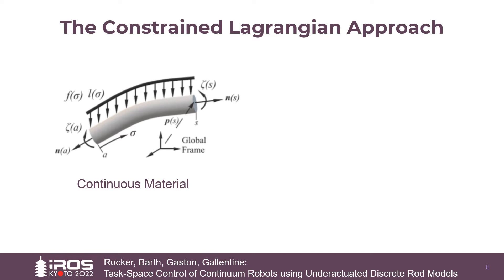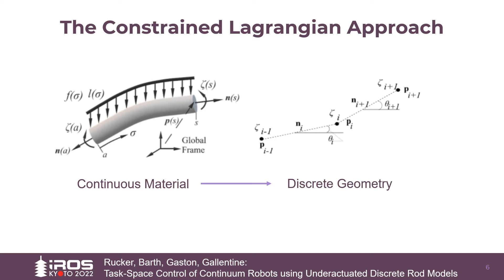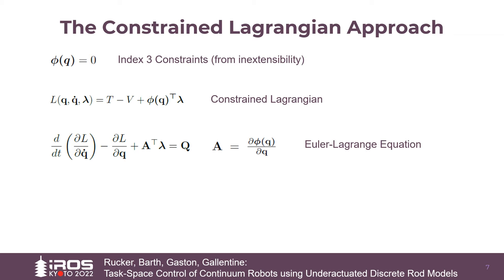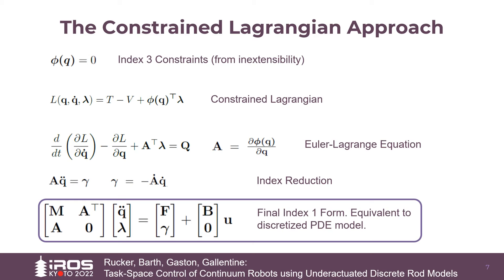Alternatively, we can use a discrete constrained Lagrangian approach, which starts by representing the elastic material with a discrete geometry, associating positions and moments with the nodes, and associating angles and forces with the connecting edges. The discrete geometry contains index 3 constraints due to inextensibility. The configuration vector q includes the position and orientation of each discrete link. We form the constrained Lagrangian based on discrete kinetic and potential energies, and then apply the Euler-Lagrange equation for constrained systems, where lambda represents internal constraint forces. Then, performing index reduction, we arrive at a final index 1 set of differential algebraic equations that are equivalent to those produced by the first PDE-based approach.